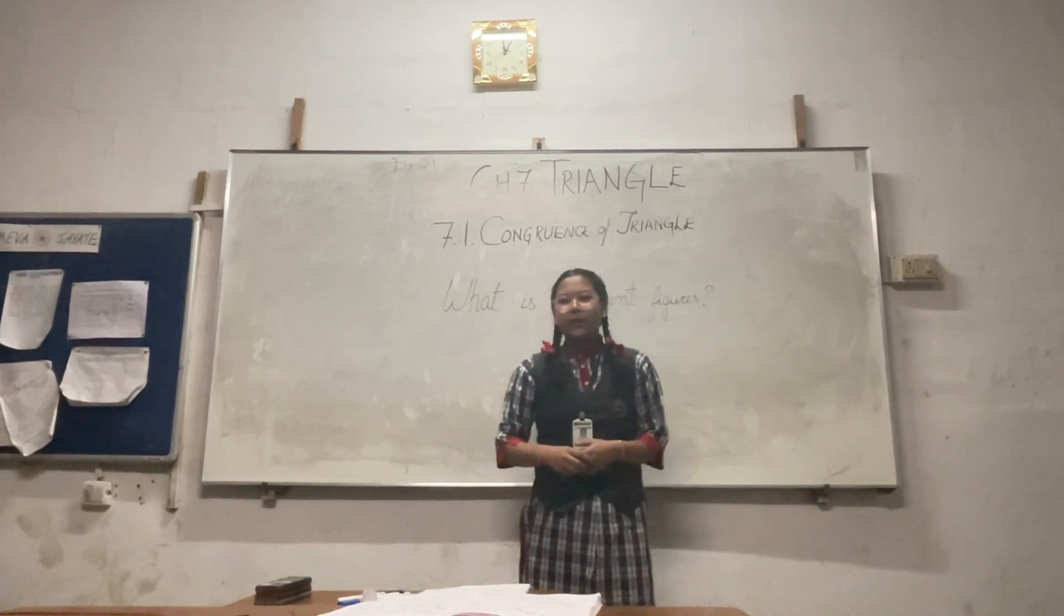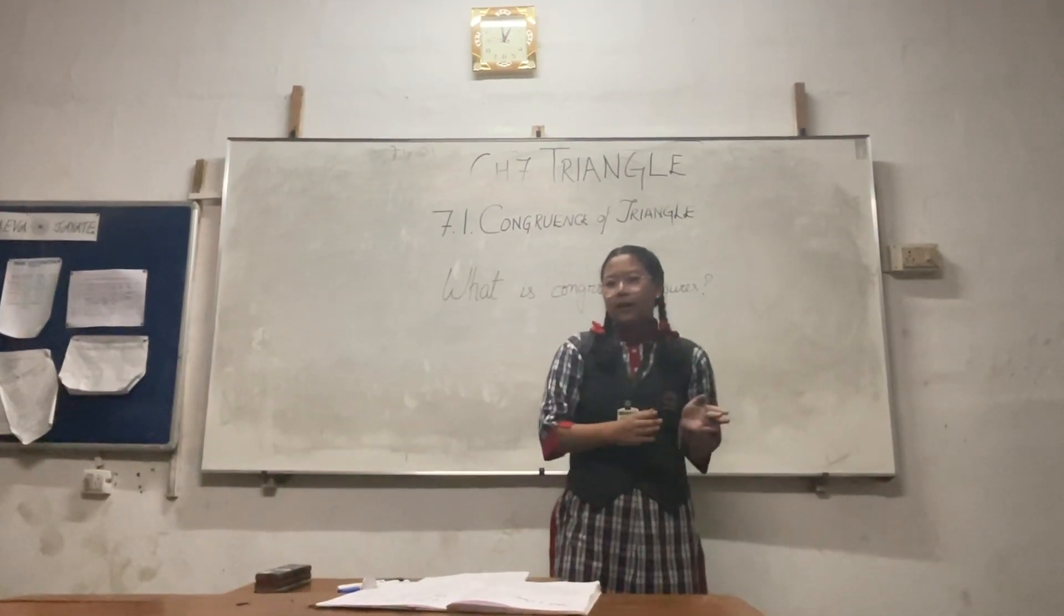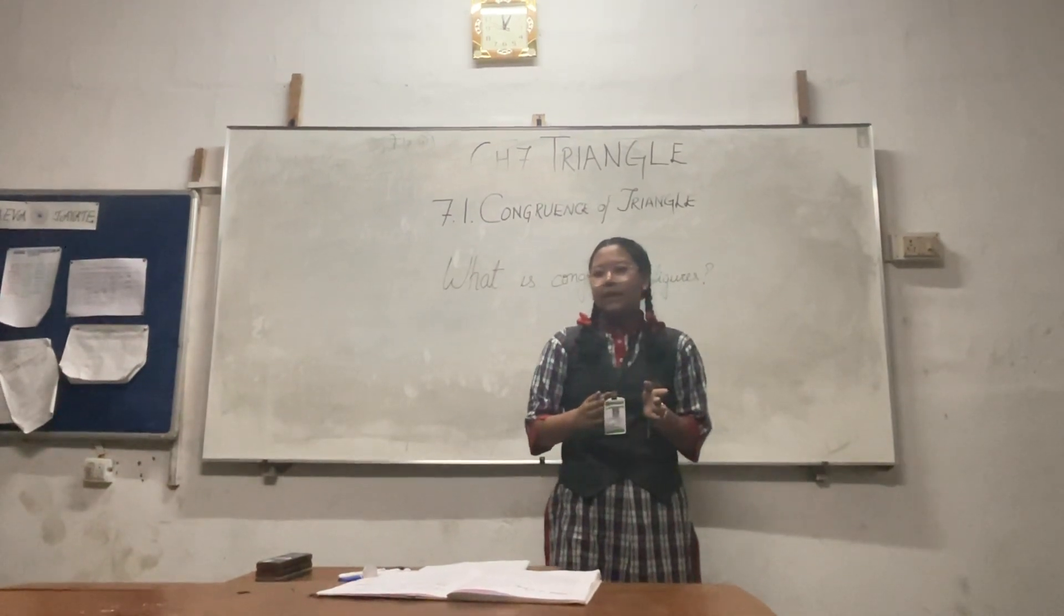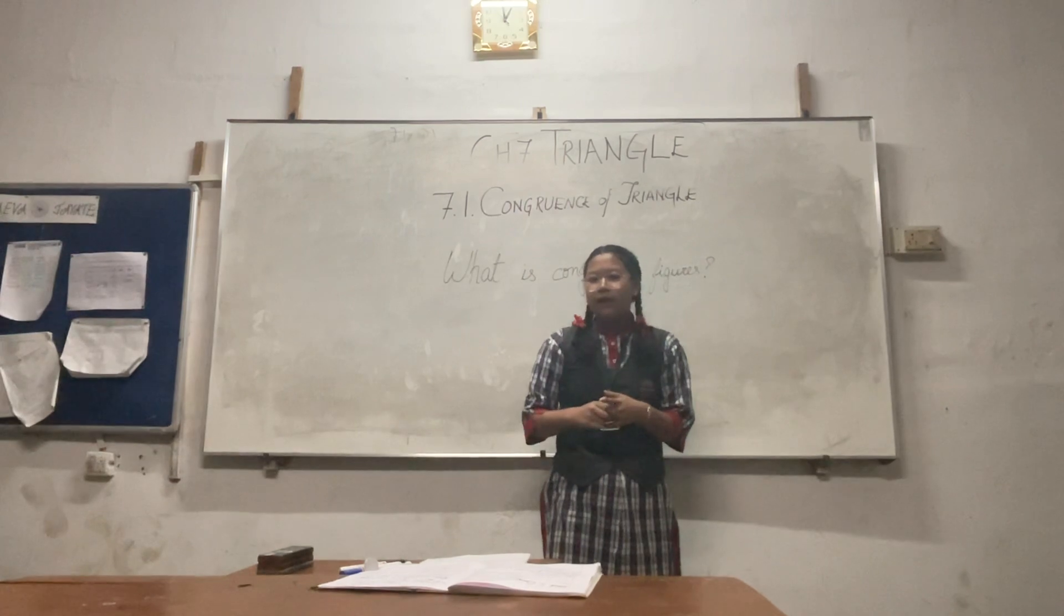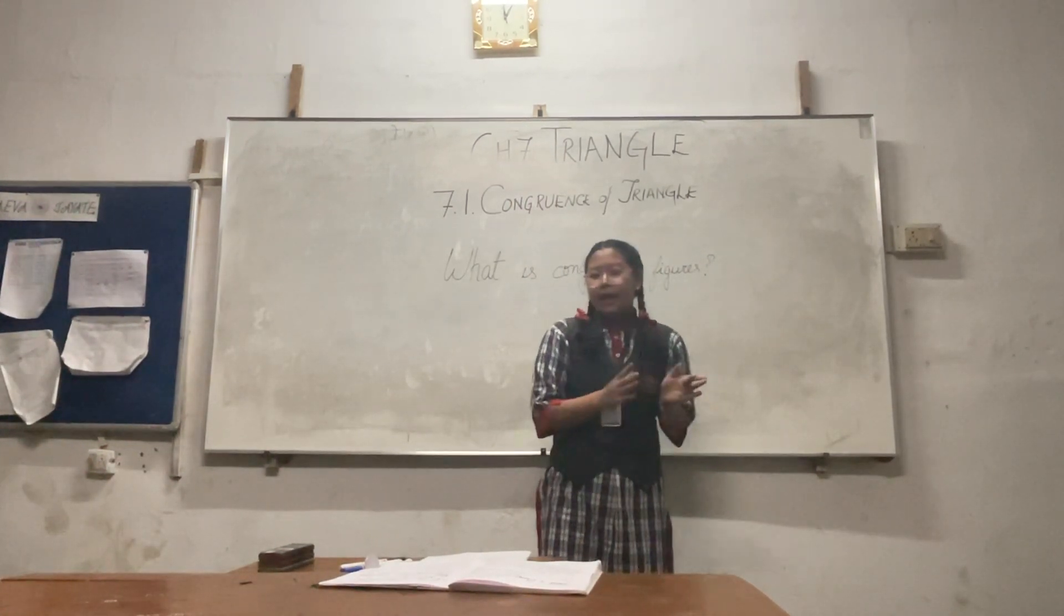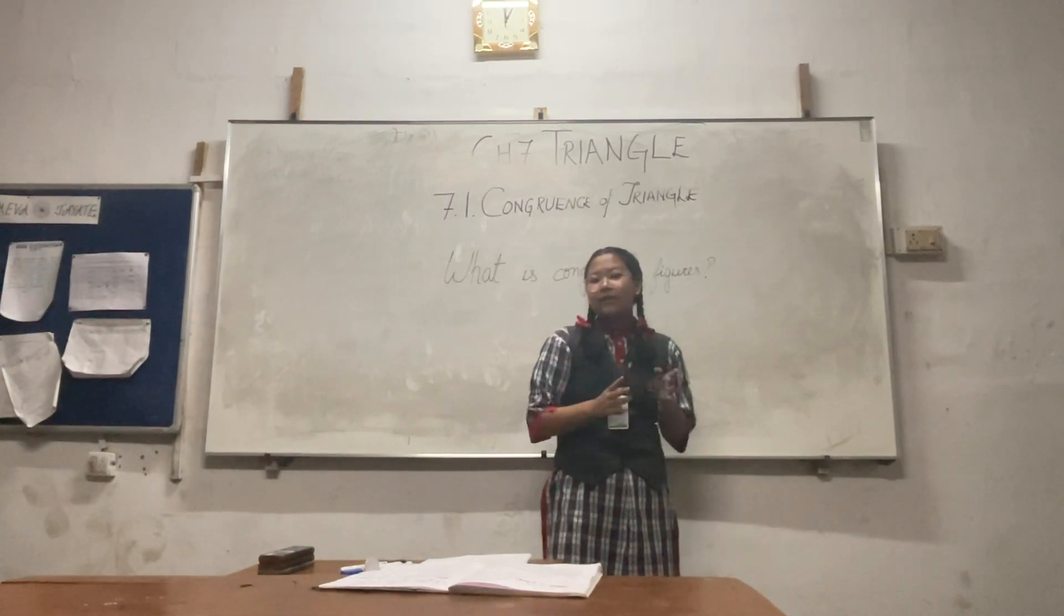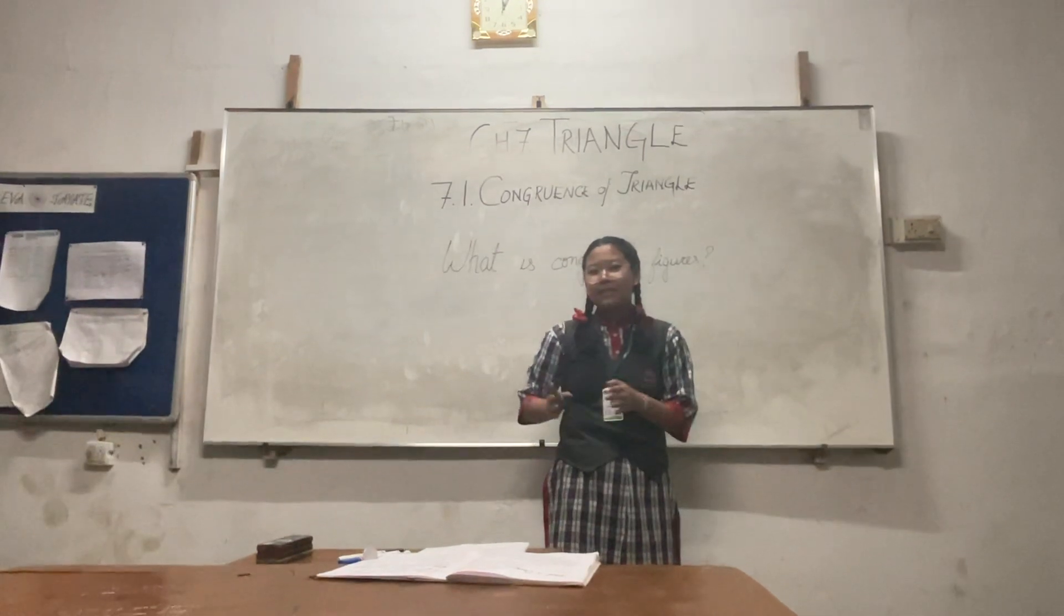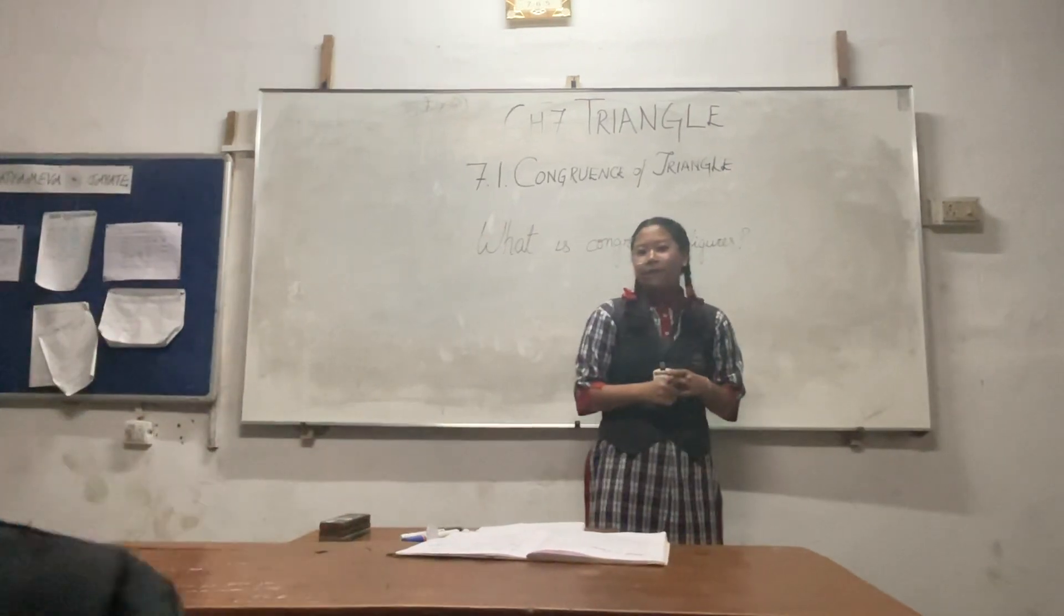Before discussing what is congruence of triangles, let us first know what is congruence. If we compare two figures, and the two figures have exact same size and shape, it is said to be congruent. In simple language, if two figures are exactly of the same size and shape, they are congruent.